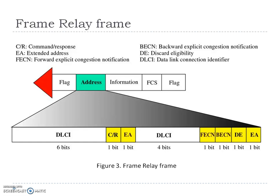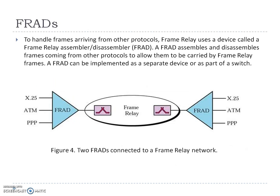To increase the range of DLCIs, the Frame Relay address has been extended from the original 2-byte address to a 3- to 4-byte address. Frame Relay uses a device called a Frame Relay Assembler/Dissembler (FRAD) to handle frames arriving from other protocols. A FRAD assembles and dissembles frames coming from other protocols to allow them to be carried by Frame Relay frames. As shown, two FRADs are connected to a Frame Relay network.